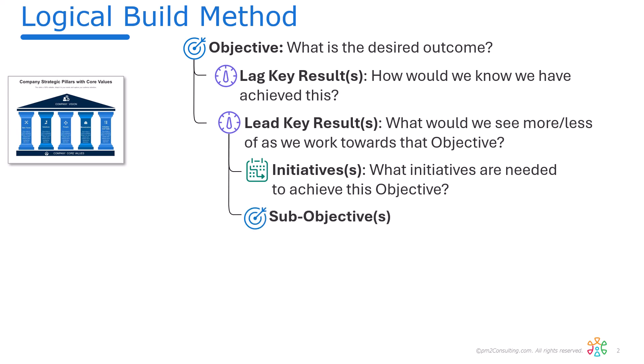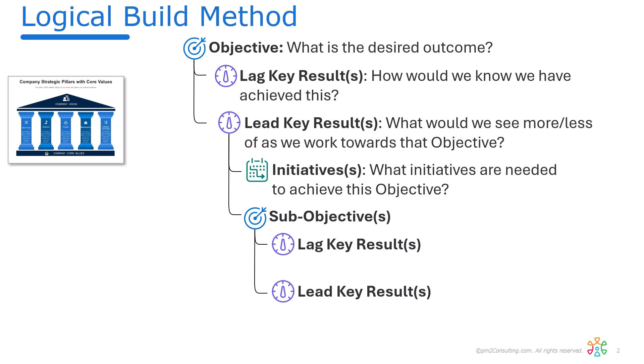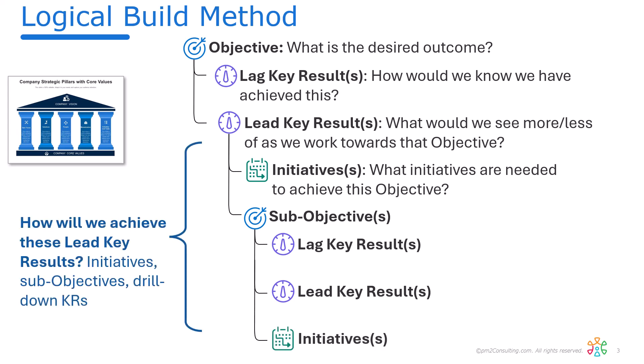Or you may have sub-objectives. If you have a sub-objective, it also has lagging key results, leading key results, and possibly initiatives. So this becomes a repeating structure: what's the lagging key result, what's the leading key result, then explaining how we're going to get there — a repeatable structure used in every single instance.